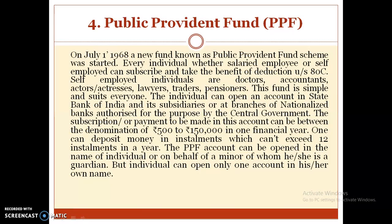The last type is Public Provident Fund. On July 1, 1968, a new fund known as the Public Provident Fund scheme was started. Every individual, whether a salaried employee or self-employed, can subscribe and take the benefit of deduction under Section 80C. Self-employed individuals include doctors, accountants, actors, actresses, lawyers, traders, and pensioners.